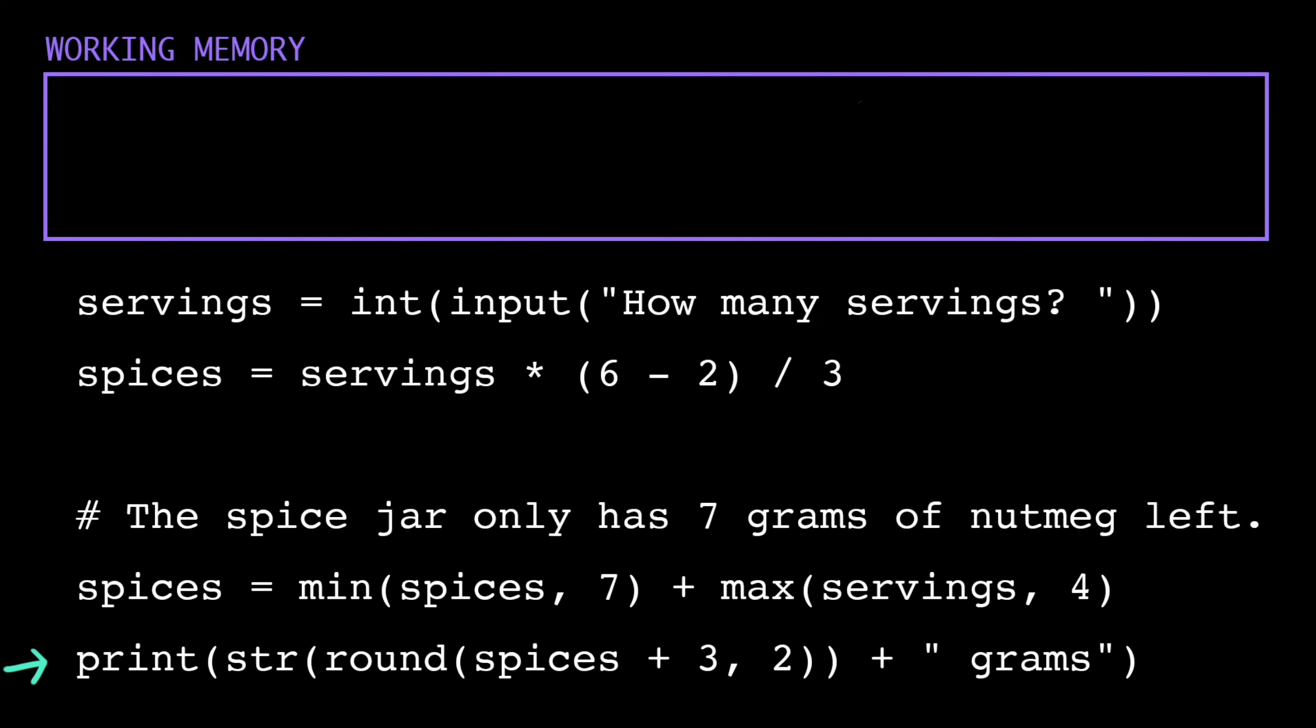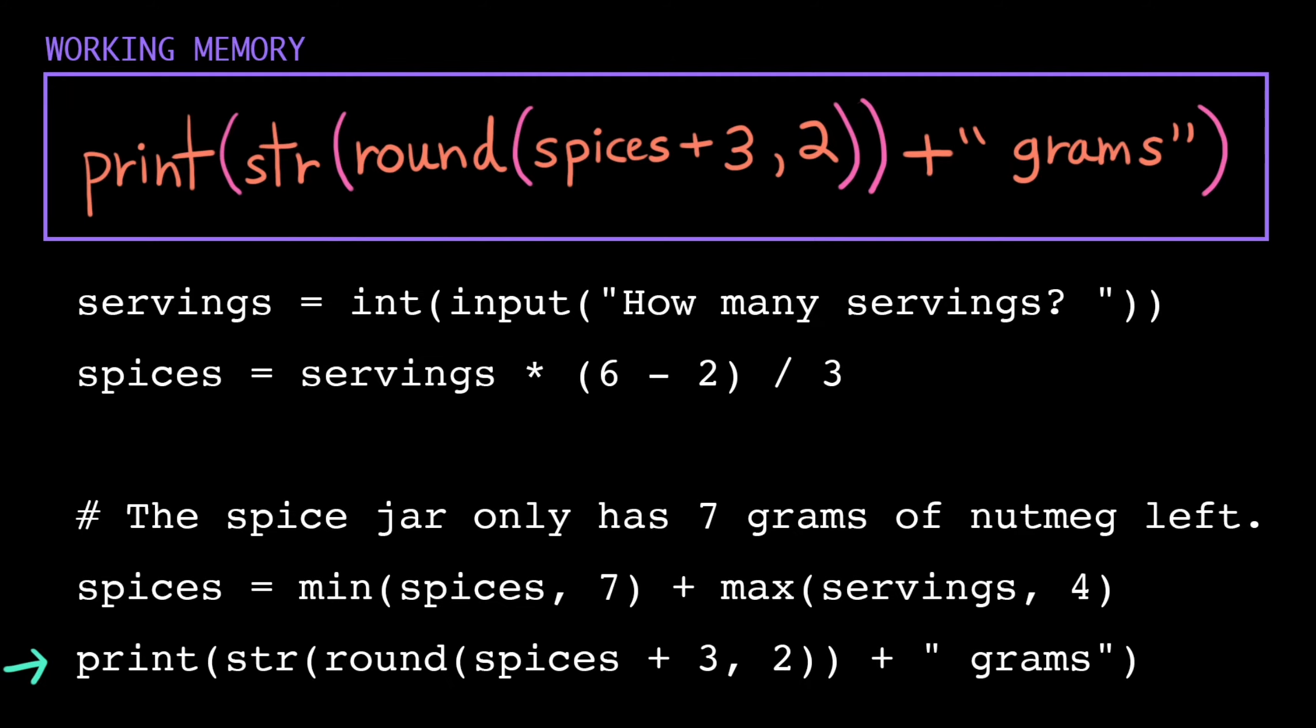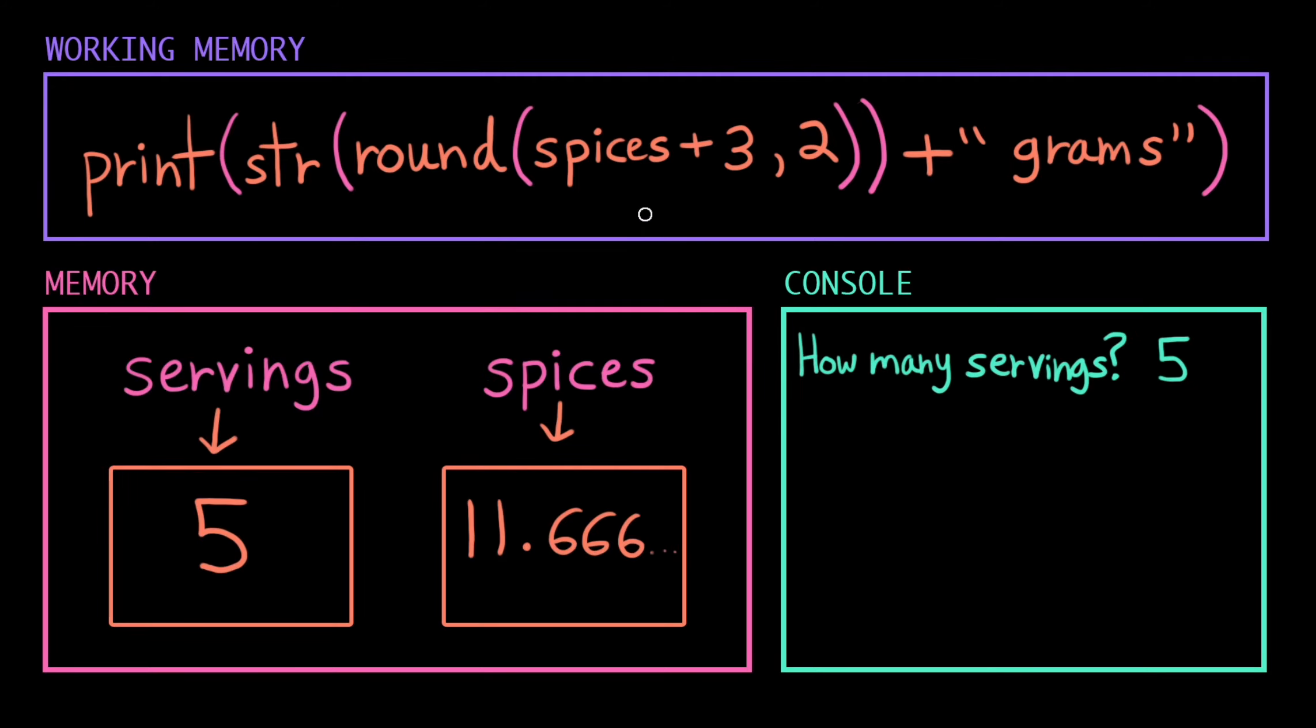Next line. Now that's a lot of parentheses. We're starting in and we're moving out. We've got an expression here that needs simplifying. We're substituting in spices and then we're adding three to get that down to a single value.